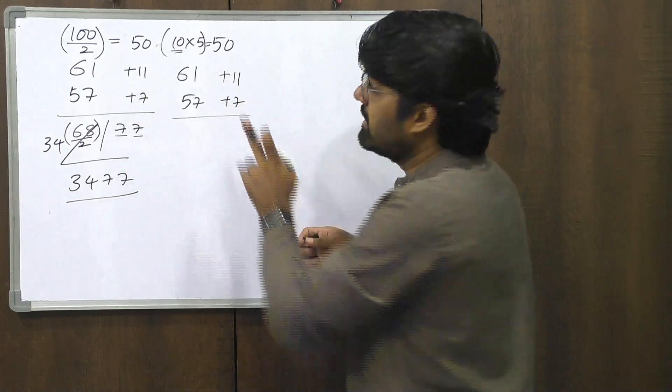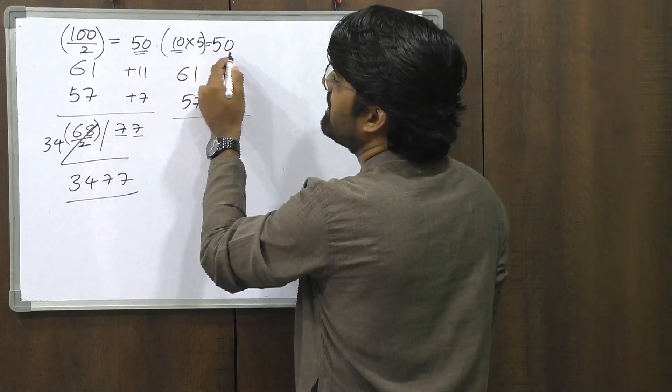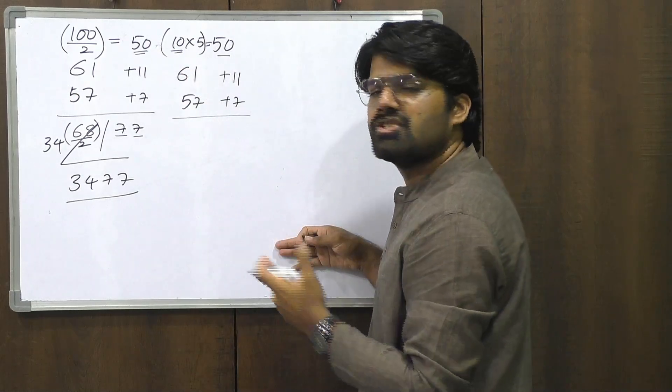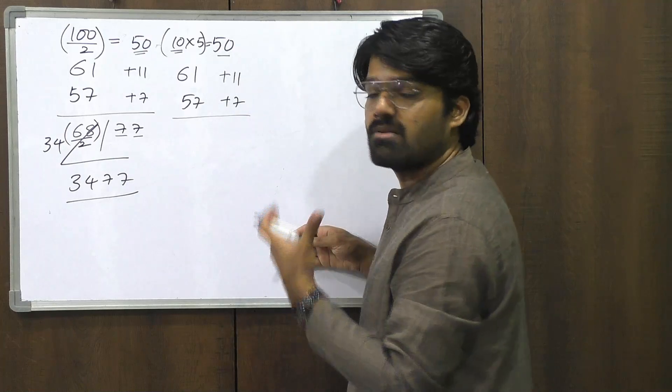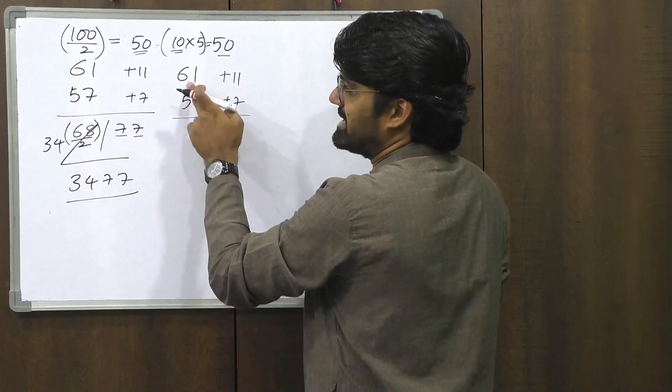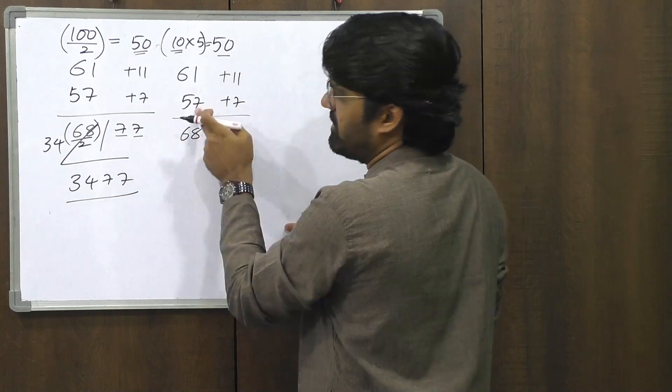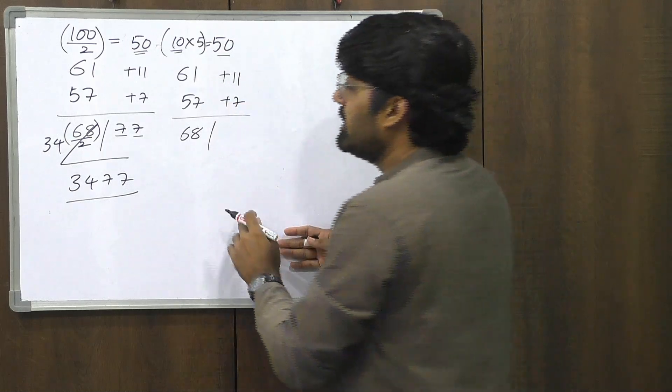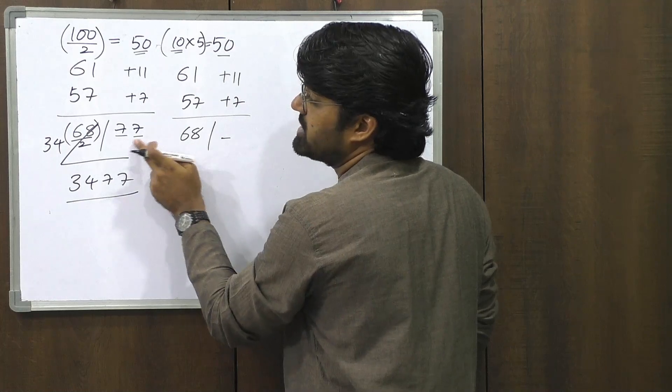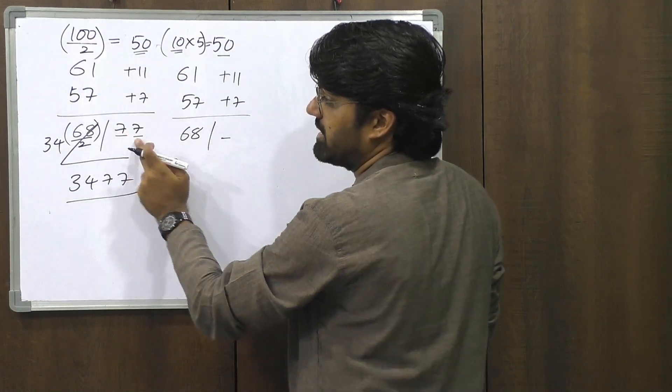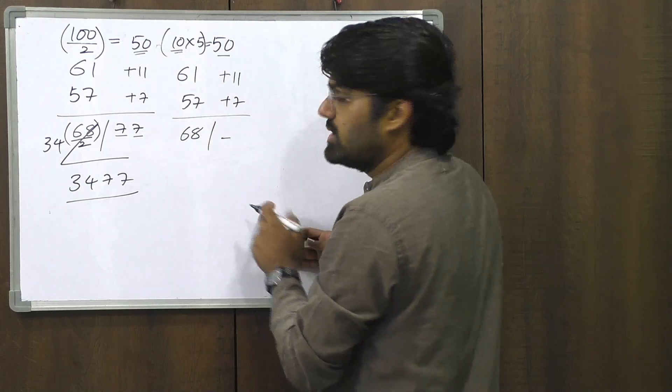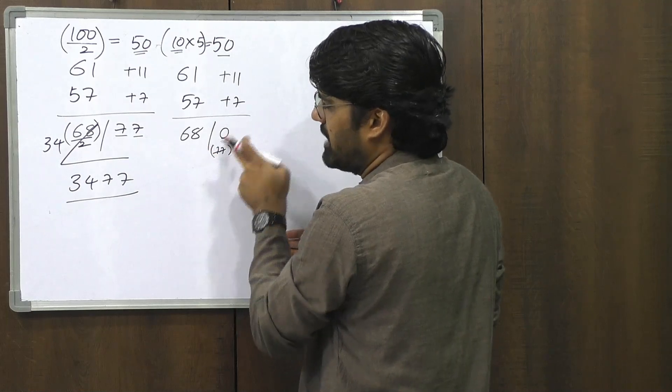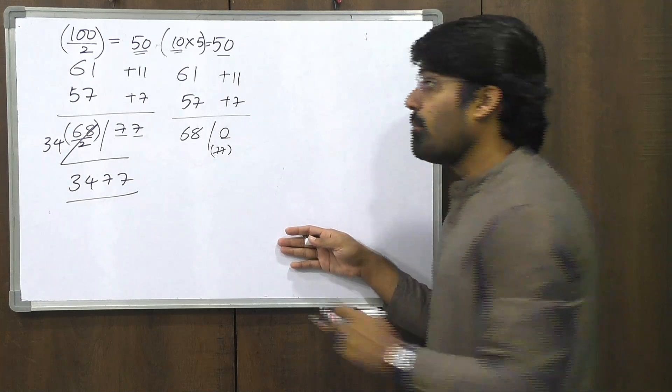11 and 7 here. Remember the working base is still 50 like in the earlier case. But earlier 50 was arrived at by taking 100 by 2. Now we have arrived at 50 by taking 10 into 5. How does the process change? Let's see. First step, 61 plus 7, 68 or 57 plus 11 is also 68. And the second part of the answer is, as you know, 11 into 7, 77. But remember, now we have only one digit. Earlier, we had two digits since the base was 100. The original base was 100. Here the original base is 10. So we have only one digit, 0. But then what do we get? We get a 77. Now that's a simple way to work around. I mean, you take 7 in the answer and that other 7 gets carried forward to the 10th space.